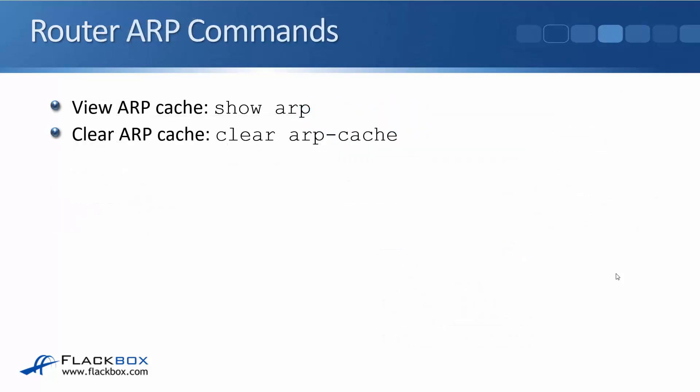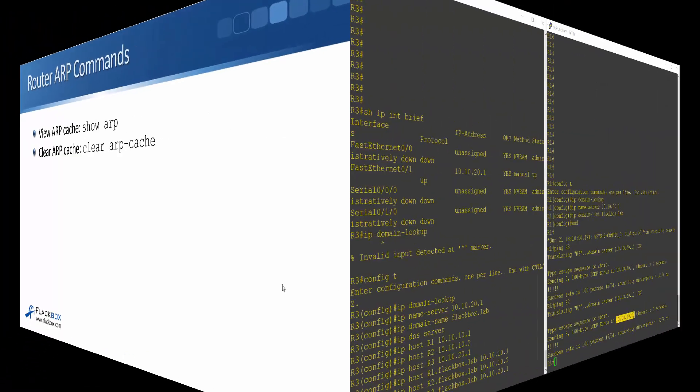That is how ARP works for routed traffic. If you want to view the ARP cache on a Cisco router, the command is simply 'show arp', and to clear the ARP cache it's 'clear arp-cache'. Let's have a look at that now in the lab.